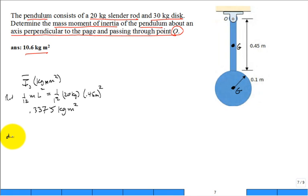And then what about the disc? What was the equation for the disc? Wasn't it one half M the radius of the disc squared? So we have one half the mass of the disc, 30 kilograms. And then the radius of the disc, 0.1 meter squared.